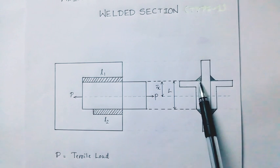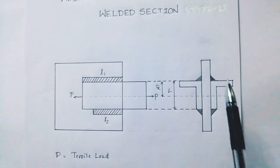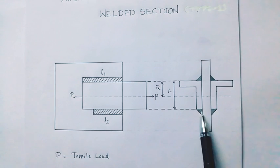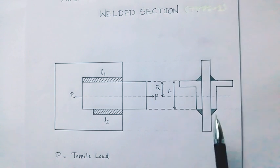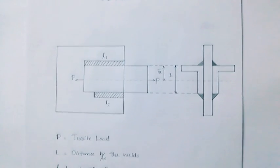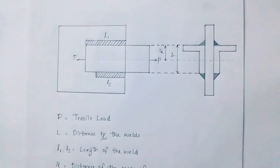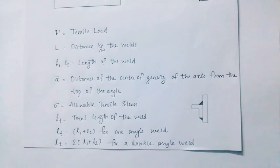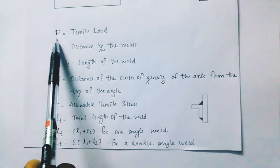The top U is the weld on the double-angled weld section. P is equal to the tensile load.